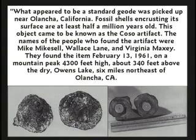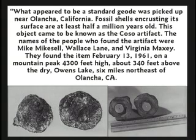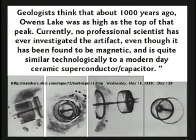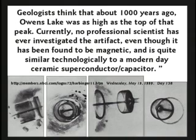Here's the x-ray of the geode. What appeared to be a standard geode was picked up near Olancha, California. Fossil shells encrusting its surface are at least a half million years old. This came to be known as a COSO artifact. Found in 1961 on a mountain peak 4,300 feet high, 340 feet above the dry Owens Lake. Geologists think about a thousand years ago Owens Lake was as high as the top of that peak. No professional scientist has ever investigated the artifact, even though it is found to be magnetic and is quite similar technologically to a modern-day ceramic semiconductor capacitor.